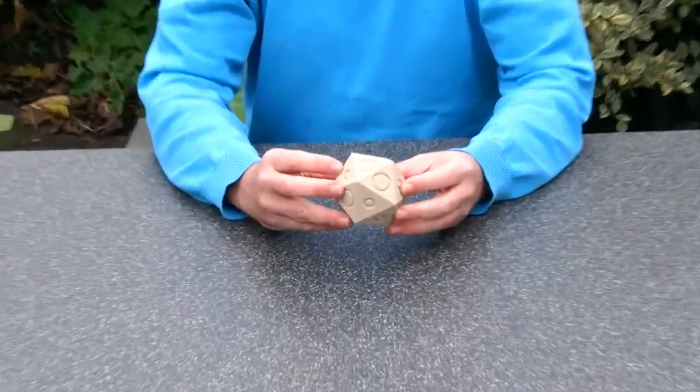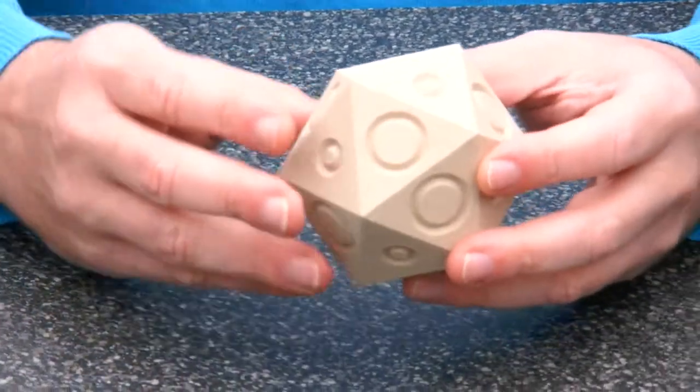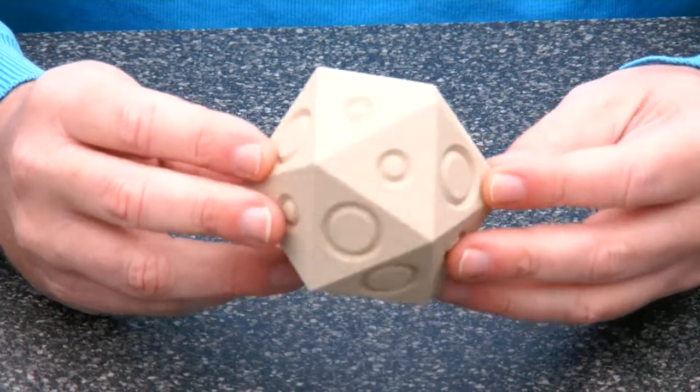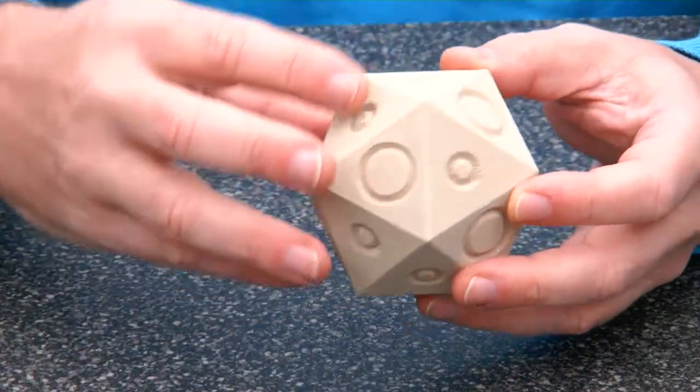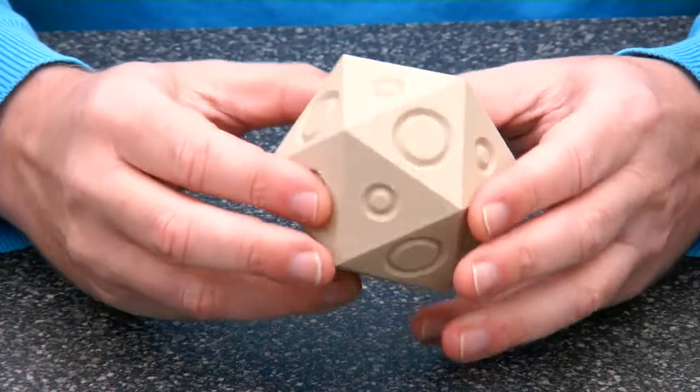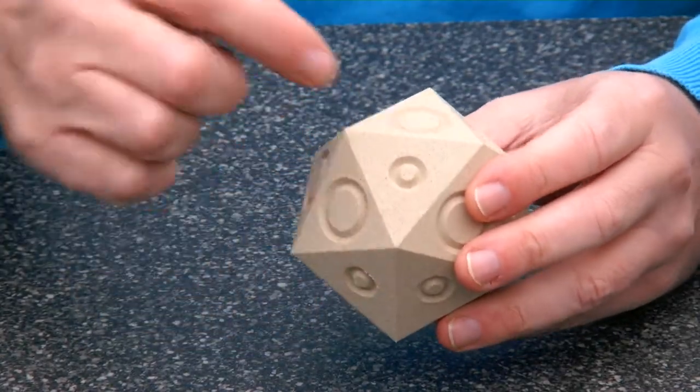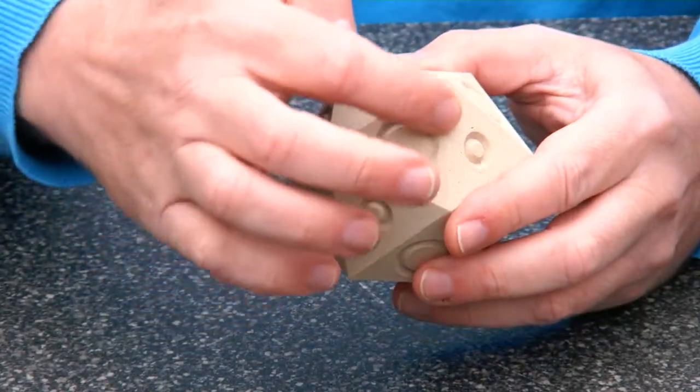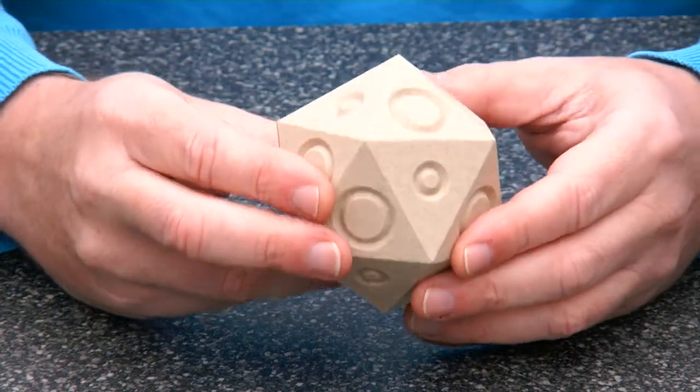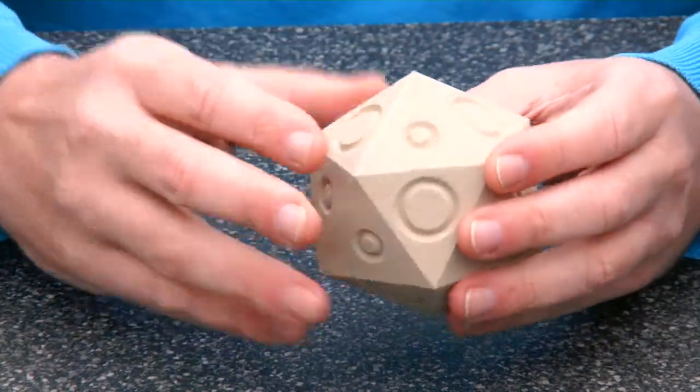The object of this puzzle is of course to discover what's the symmetry. You can see it's an Icosahedron. There are 20 triangles and each triangle has either a small circle or a large circle. And the object of the puzzle is to find the symmetry.